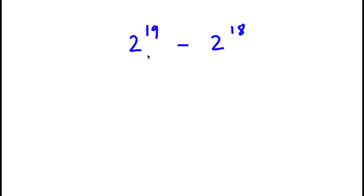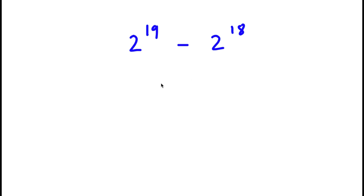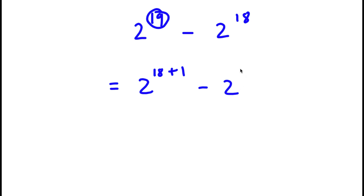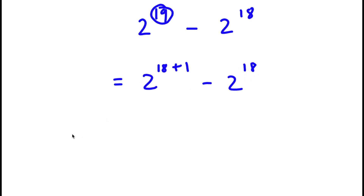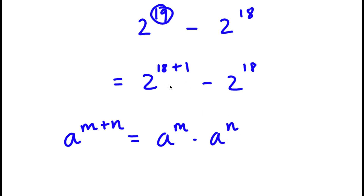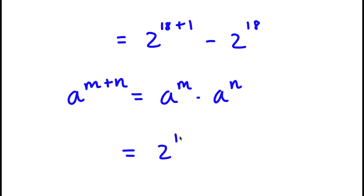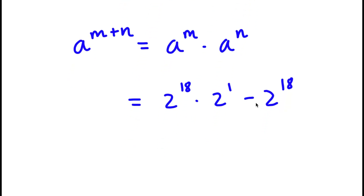In this problem, I have 2 to the power of 19 minus 2 to the power of 18. To solve this, I'm going to first rewrite 19 as 18 plus 1. So now I have 2 to the power of 18 plus 1 minus 2 to the power of 18. If I have something in the form a to the power of m plus n, this equals a to the power of m times a to the power of n. So 2 to the power of 18 plus 1 becomes 2 to the power of 18 times 2 to the power of 1, minus 2 to the power of 18.